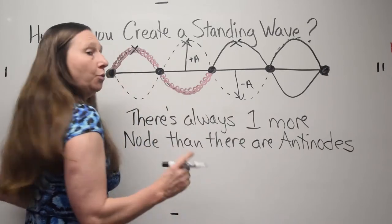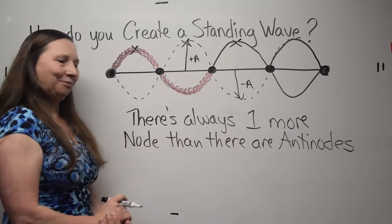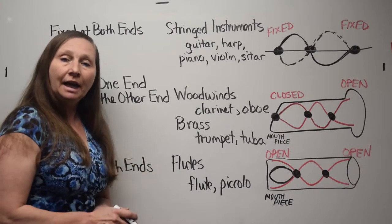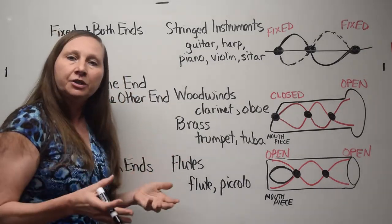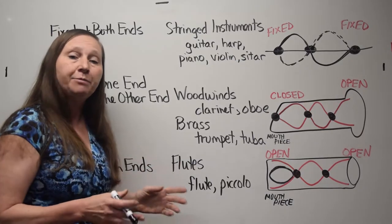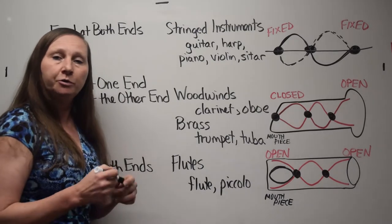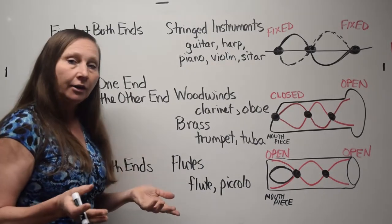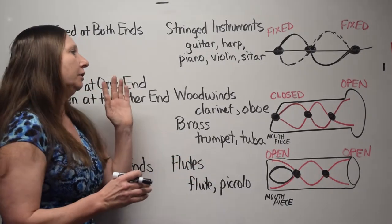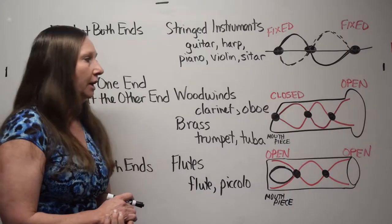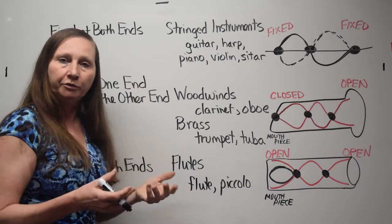That's always one more node than there are anti-nodes, and this is for a standing wave that is fixed at both ends. Now I'd like to go over three categories of musical instruments very briefly — this could be a whole video by itself. We'll look at how the standing waves inside those three instruments differ from each other.